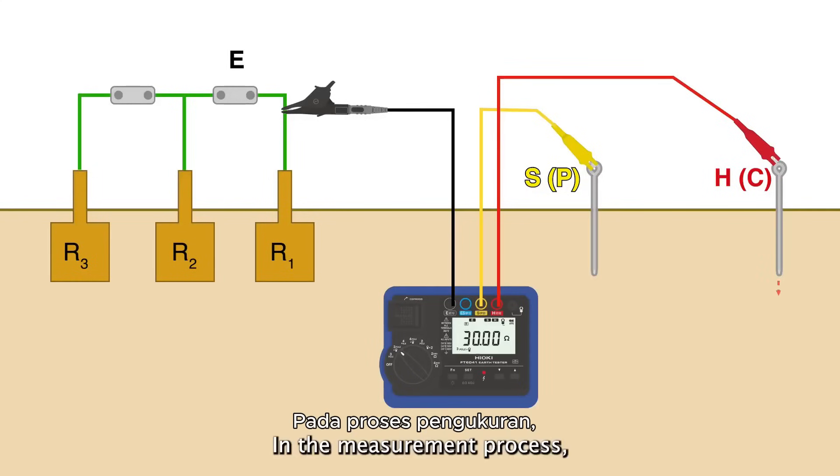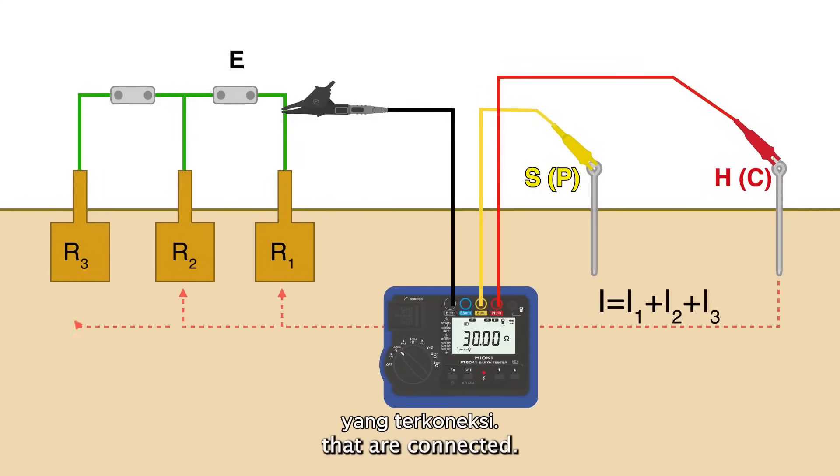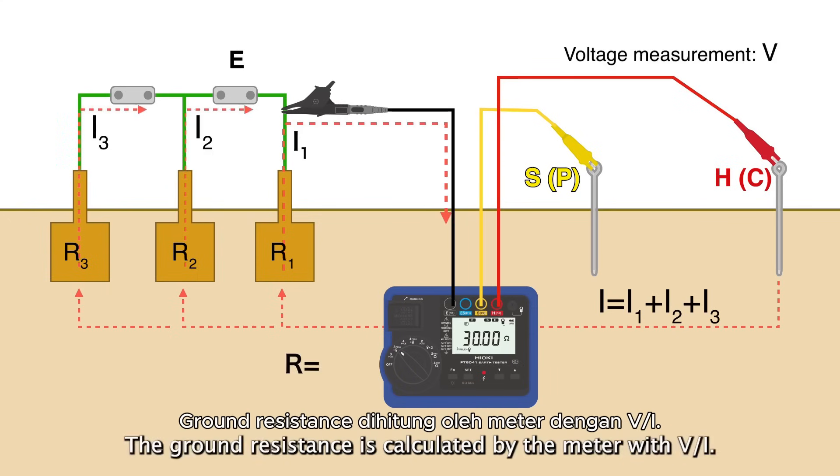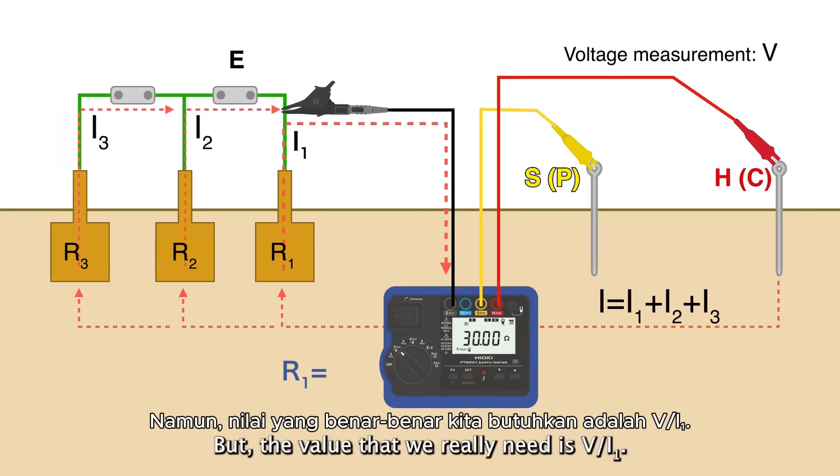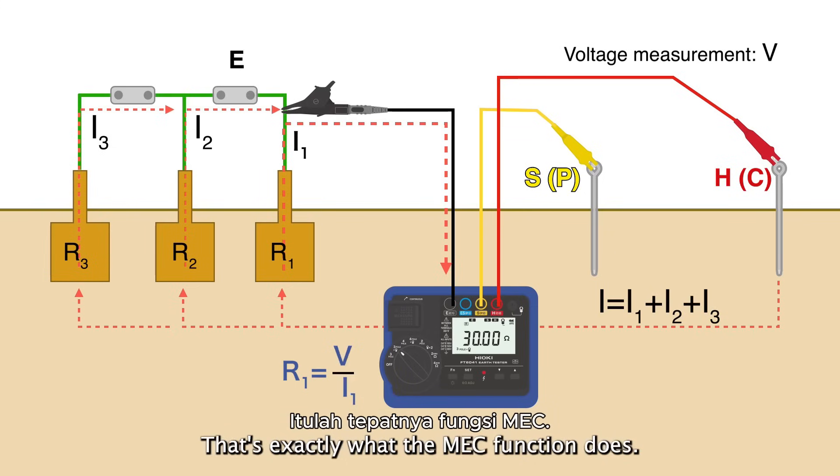In the measurement process, the current flows through all the grounding electrodes that are connected. The ground resistance is calculated by the meter with V over I, but the value that we really need is V over I1. That's exactly what the MEC function does.